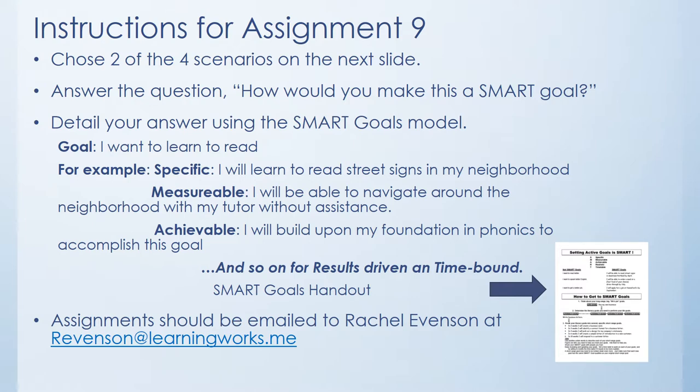Assignment nine is an assignment we'd like you to submit to Rachel. Choose two of the scenarios on the next slide and answer the question: how would you make this a SMART goal? Detail your answer using the SMART goals model. There's an example on the slide for you to refer back to if needed. You can include your answer in the body of an email or send it as a Word document attachment. If you'd like a better understanding of the SMART goal model, there's an attachment on the slide — you can access that document by clicking on the picture.